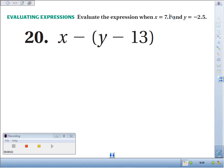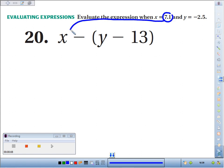In number 20, you're supposed to evaluate the expression when x is 7.1, so we're going to substitute 7.1 in for x. y is negative 2.5, so I'm going to take negative 2.5 and substitute that in for y.